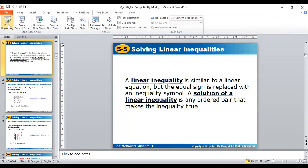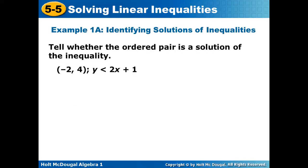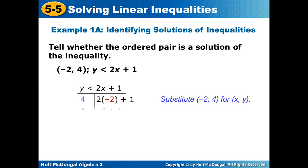Now here's an example: identifying solutions of inequalities. You are going to say whether an ordered pair is a solution of the inequality or not. These questions are not in your book, so listen carefully. You just need to replace the value of X and Y in the inequality — in place of X you write 2 multiplied by 4, and in place of Y you write negative 2.